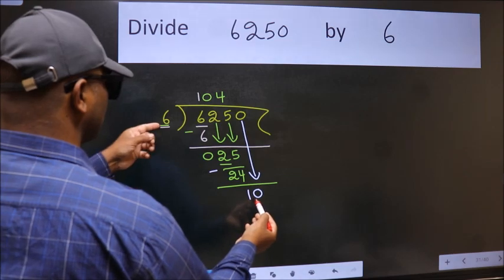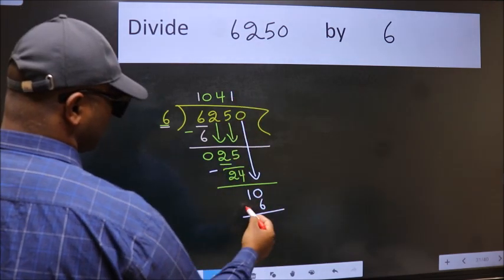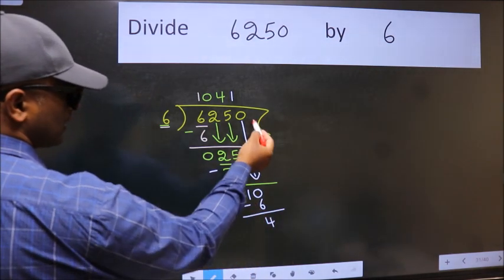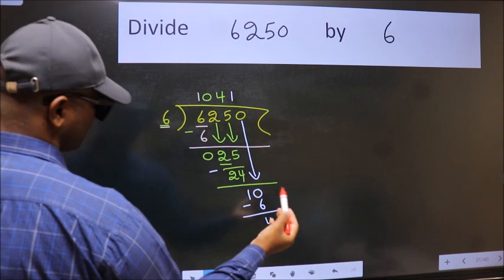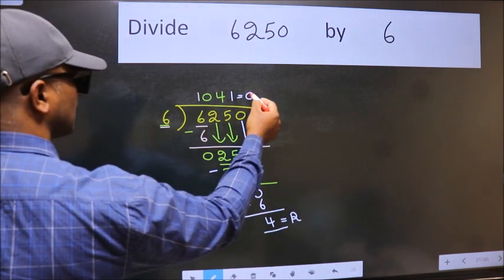A number close to 10 in the 6 table is 6 ones 6. Now, we subtract. We get 4. No more numbers to bring it down. So, we stop here. This is our remainder and this is our quotient.